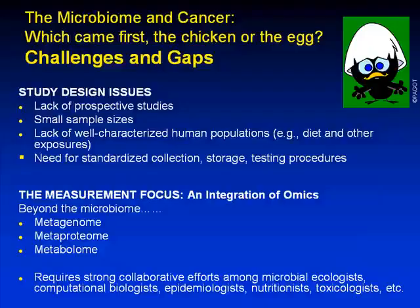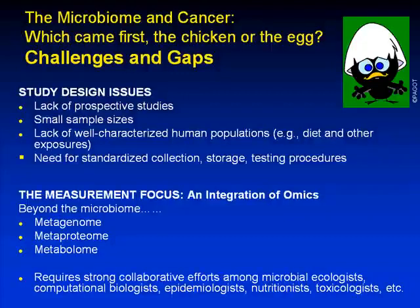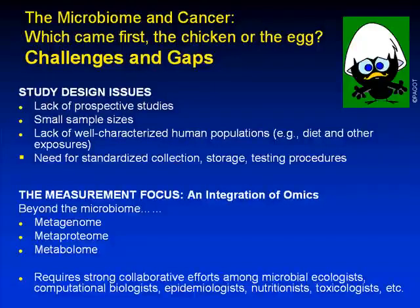So where are we with regards to the microbiome and cancer? Which came first, the chicken or the egg? In this group of diseases, we lack prospective studies. Many studies done have been small sample sizes with not very well-characterized human populations as far as exposure to environmental agents or diet. There's a desperate need for standardization of sample collection, storage, and testing. We'll need to integrate various omics technologies beyond just the microbiome — moving into metagenomics, proteomics, and metabolomics — requiring a strong collaborative effort across many disciplines.